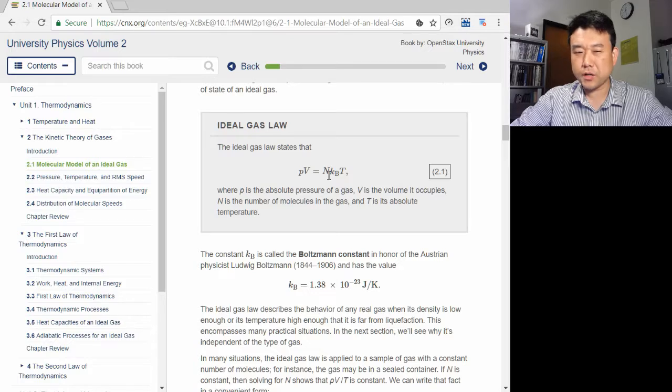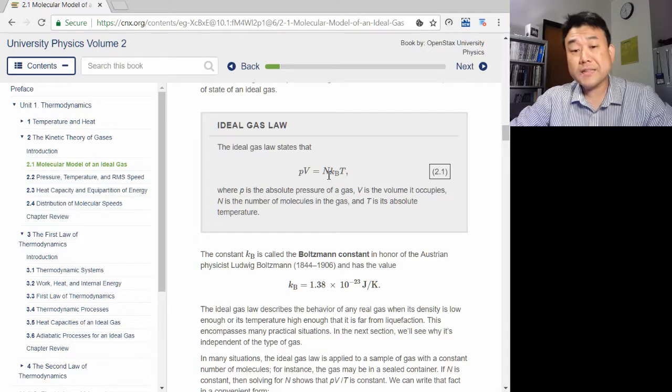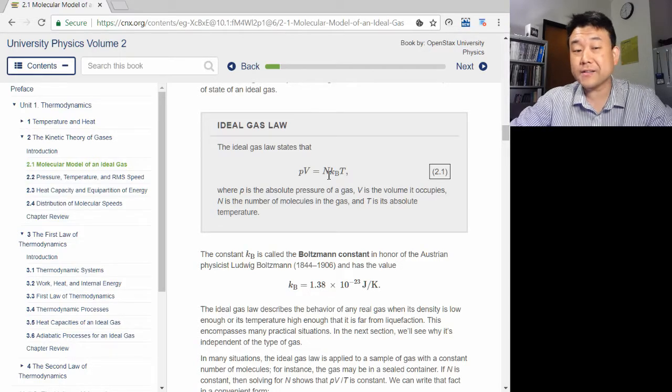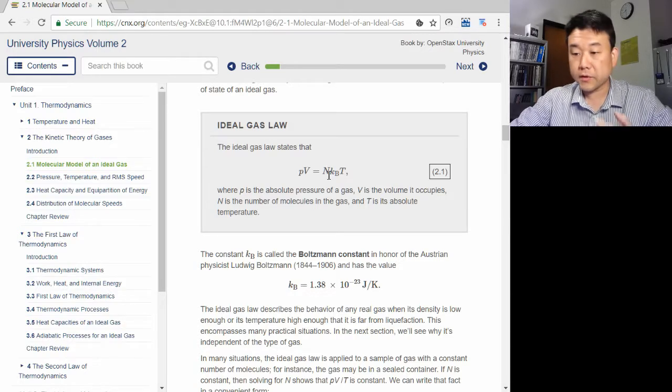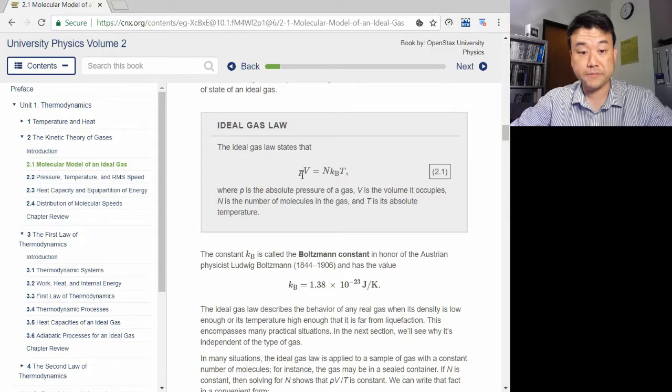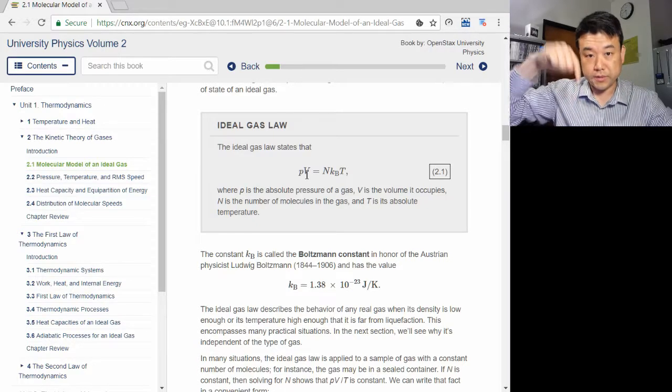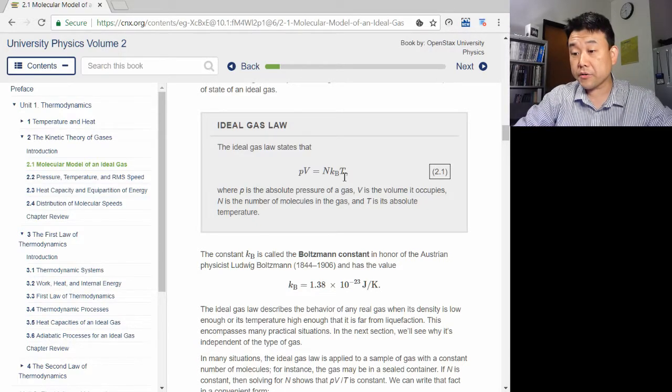N usually doesn't change once it's set. What this means is the Ideal Gas Law actually doesn't say what happens to the temperature when, for example, pressure increases. If volume decreases enough, then temperature can decrease.